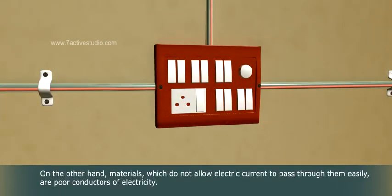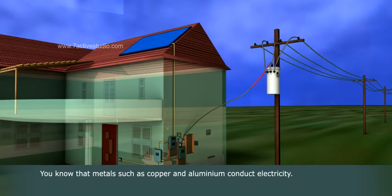On the other hand, materials which do not allow electric current to pass through them easily are poor conductors of electricity.